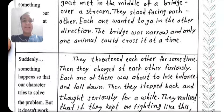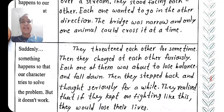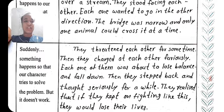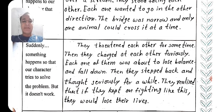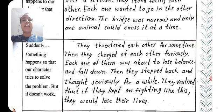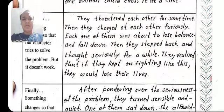Then suddenly something happens so that our character tries to solve the problem but it doesn't work. They threatened each other for some time, then they charged at each other furiously. Each one of them was about to lose balance and fall down. Then they stepped back and thought seriously for a while.